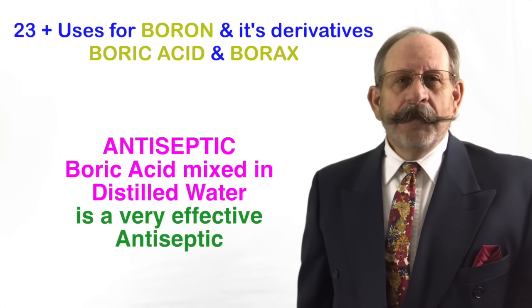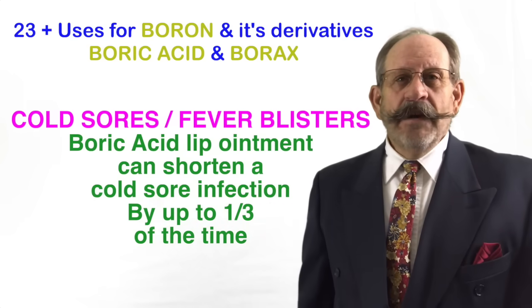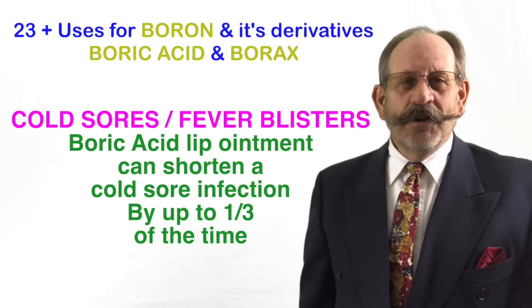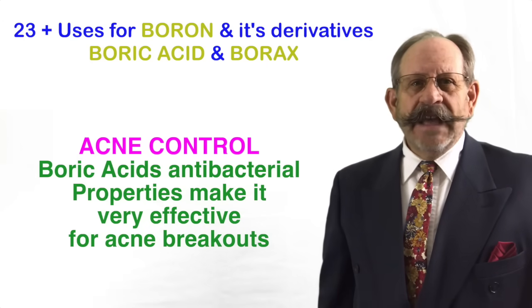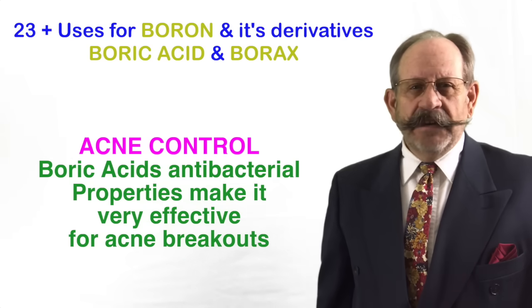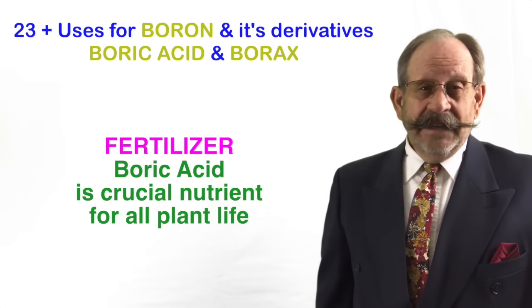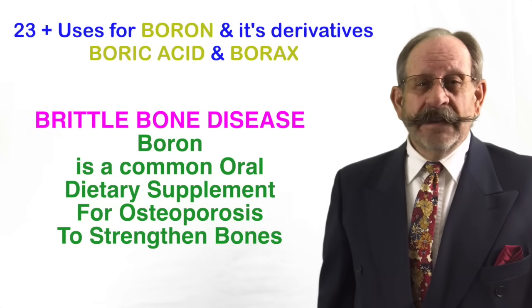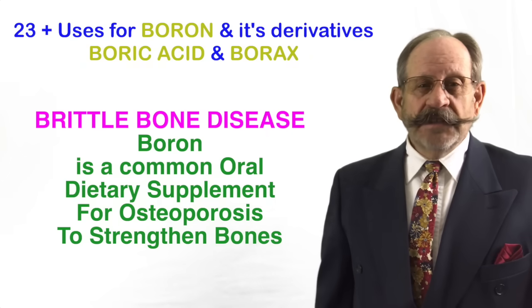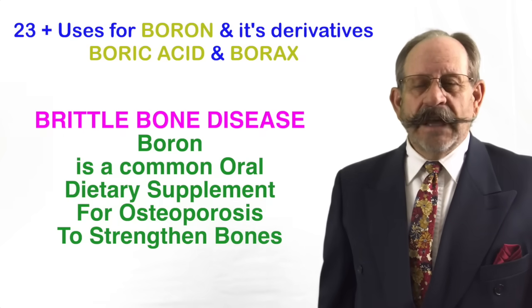Eight: it's an antiseptic — boric acid mixed in distilled water is a very effective antiseptic. Nine: cold sores — boric acid ointment can shorten a cold sore infection by up to one-third of the time. Ten: acne — boric acid's antibacterial properties make it very effective for acne breakouts; some people use it pure, some use it in an ointment. Eleven: fertilizer — it is a crucial nutrient for plant life. Twelve: boron itself comes over the counter in six milligram caplets and is used as a dietary supplement for boron deficiency and bone health, including osteoporosis and brittle bone disease.